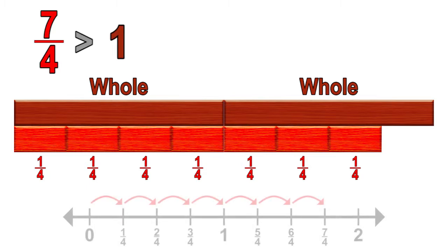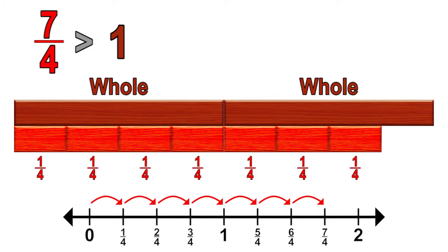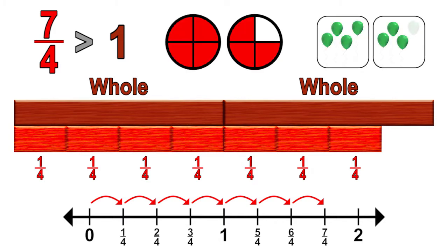Seven-fourths is a fraction greater than one whole. Similarly, on a number line, seven one-fourth sized jumps extend beyond the number one, and is also shown as more than one whole in the area model and set model. Each representation shows seven one-fourth sized pieces. The decomposed fraction, written as an equation of unit fractions, has seven addends, each being one-fourth, corresponding to seven parts of the fraction.